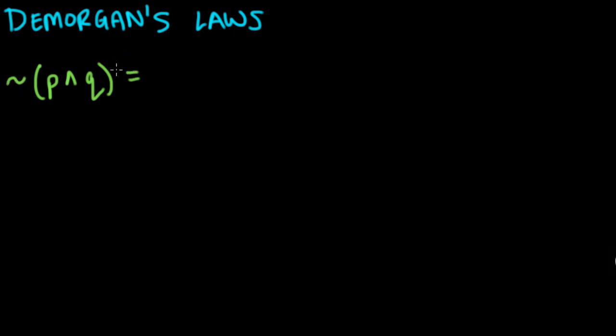If you almost think of the distributive property, in some senses you can distribute this sign. So it becomes, instead of P, you have not P. When you distribute to the sign, instead of AND, you have OR. And instead of Q, you have not Q.